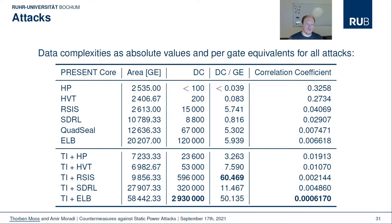We also performed key recovery attacks to determine how many measurements are required to reliably extract key information — listed as data complexity (DC). The most effective combined countermeasure is also the most expensive: exhaustive logic balancing applied to a threshold implementation, requiring about 3 million traces and more than 90 hours of non-stop measurements. We also list DC per gate equivalent to judge cost effectiveness. The most cost-effective combination is the shuffled threshold implementation, about six times cheaper than ELB plus TI. It is clear that neither hiding nor masking alone provides a sufficient security level against this kind of attacker, and combined countermeasures are certainly required.